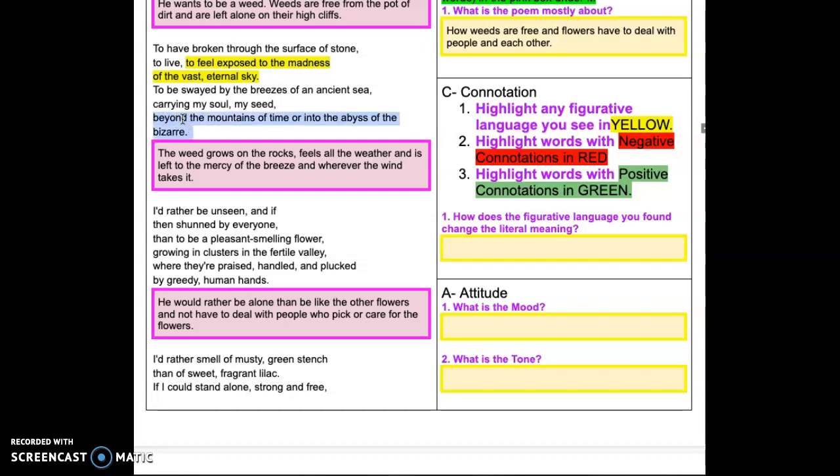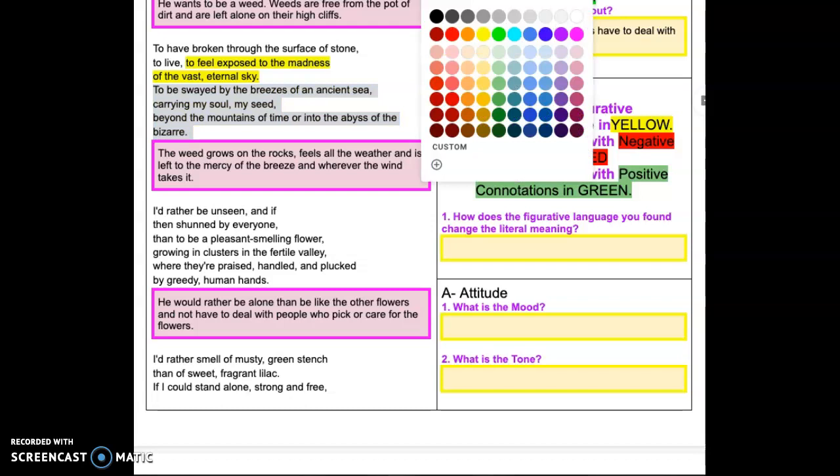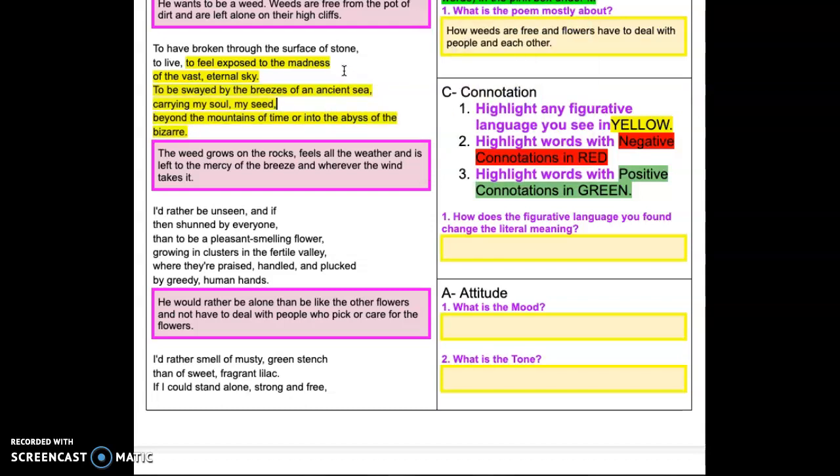So again, we have a whole bunch of figurative language in here. A lot of metaphor, a lot of description. So in this carrying my soul, my seed, some hyperbole, because obviously your soul isn't going to be carried away. But if you know anything about plants, you know that seeds are often carried. So we have to know about the symbolism of what seeds could be. They could be ideas, they could be dreams. And then beyond the mountains of time, so he's comparing time to that ragged, endless landscape of a mountain.